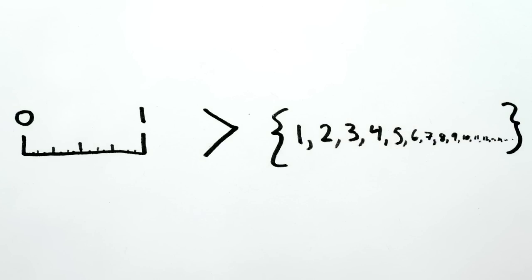But there are more real numbers between zero and one than there are in the infinite set of integers one, two, three, four, and so on. How on earth do we know this?